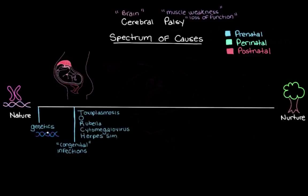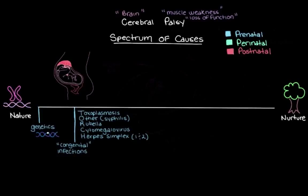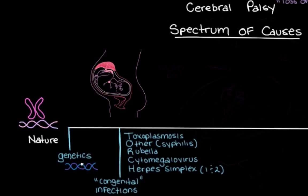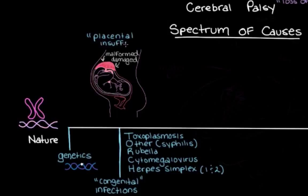There are actually two types of herpes simplex virus — type 1 and type 2. The O in TORCH stands for 'other,' a catch-all that includes infections like syphilis which can still cause cerebral palsy. Another thing that can go wrong prenatally is problems with the placenta. The placenta and umbilical cord allow the fetus to receive oxygen and nutrient-rich blood from mom. Sometimes the placenta doesn't form properly or gets damaged during gestation, preventing it from delivering oxygen and important nutrients to the fetus. This is called placental insufficiency and is another possible cause of cerebral palsy.